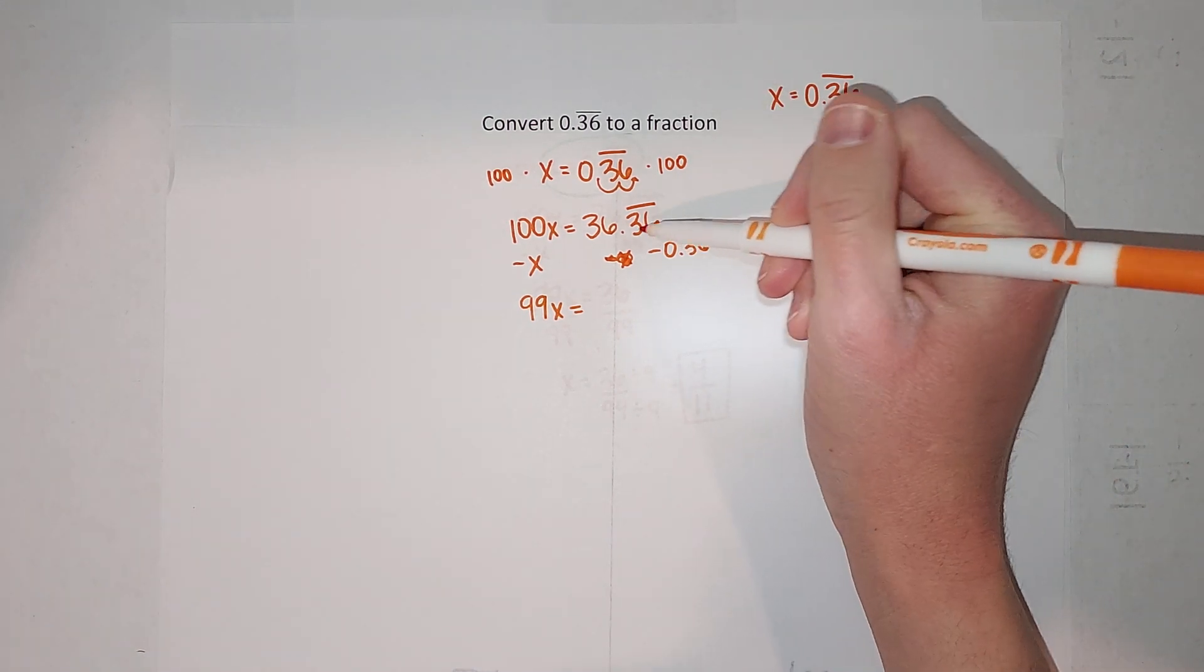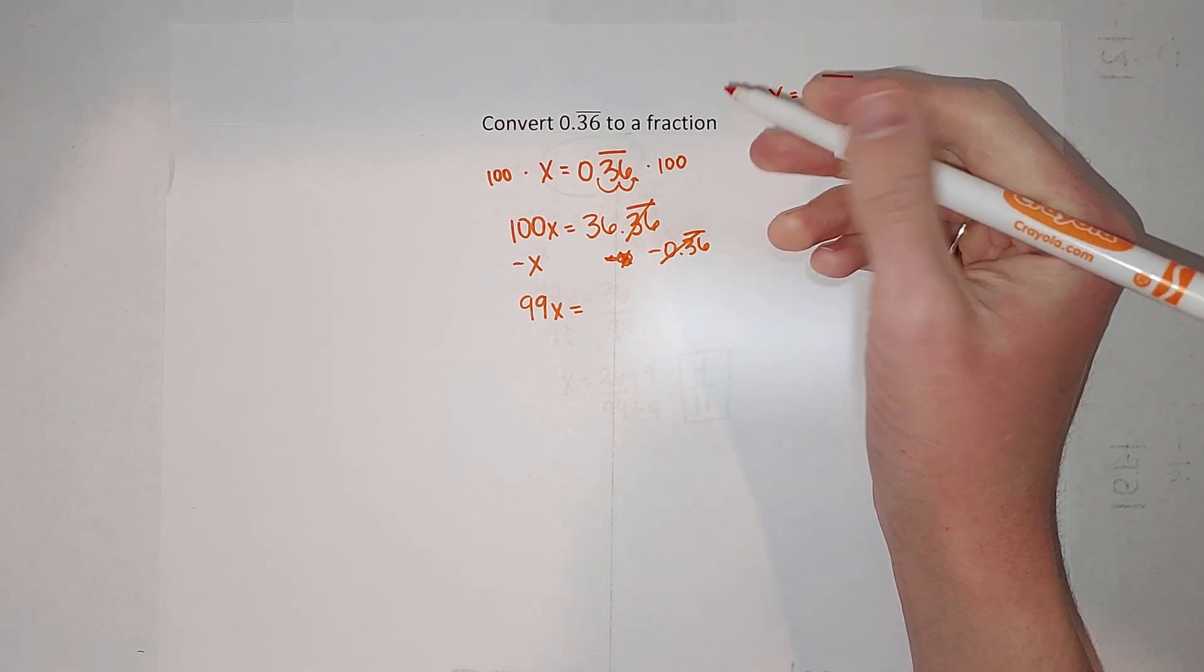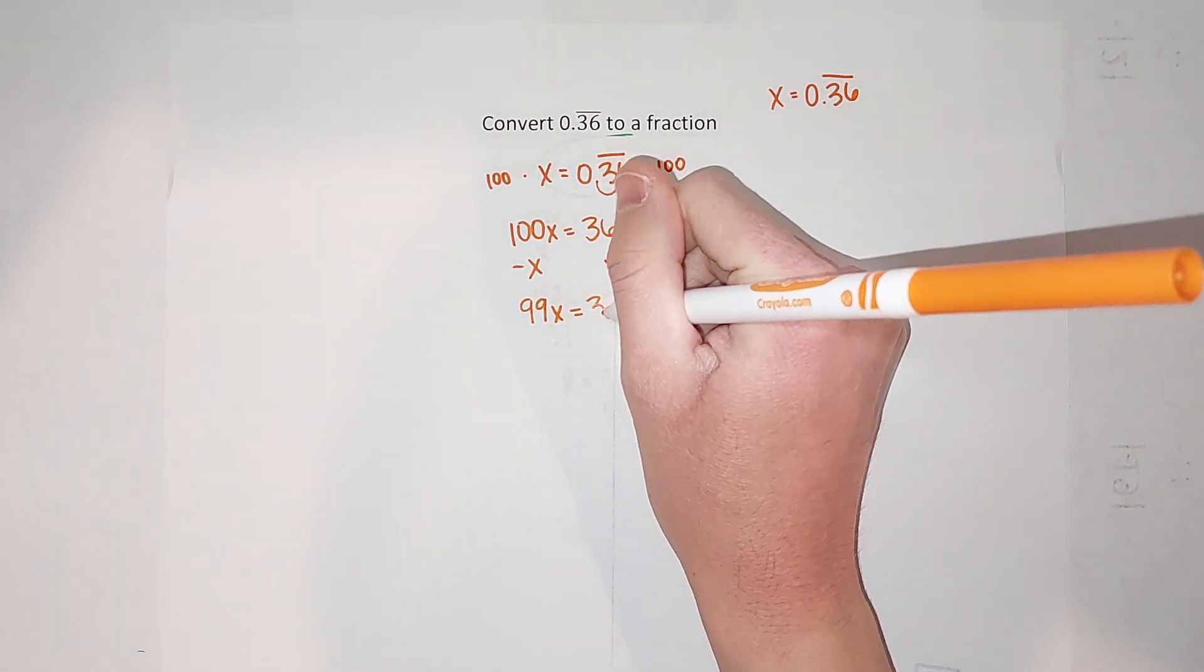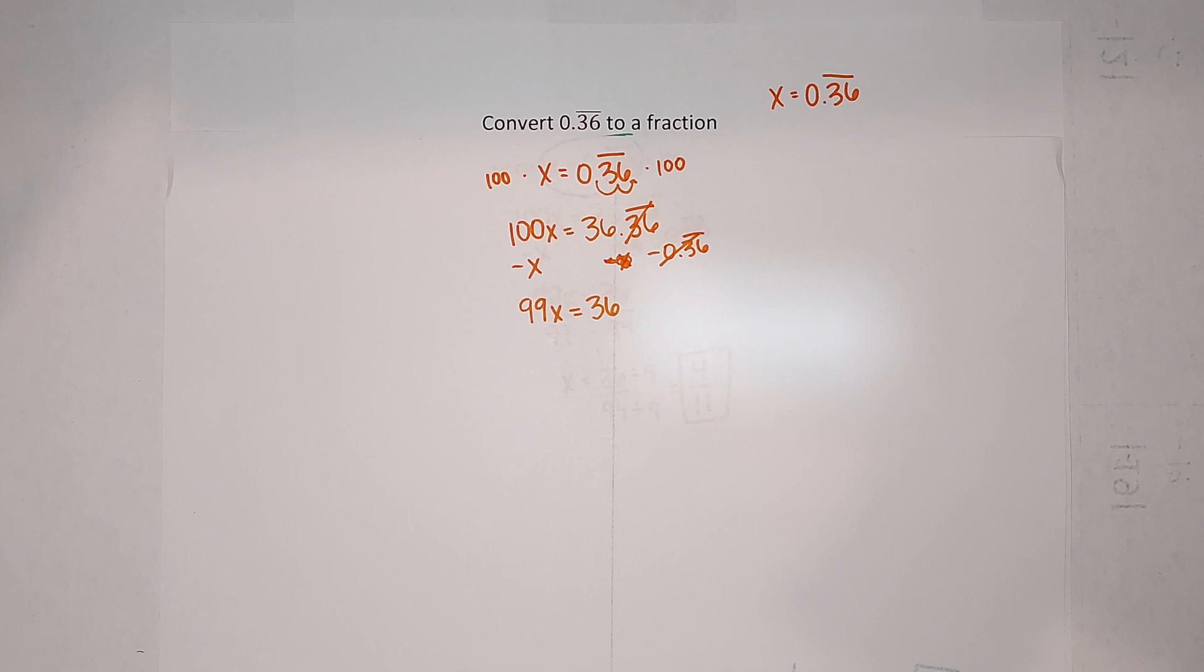So now we have 99x equals 36, and that looks much more doable, right? Like you've probably solved things like this tons of times. So we're just trying to get our x alone, so we divide by 99 on both sides.